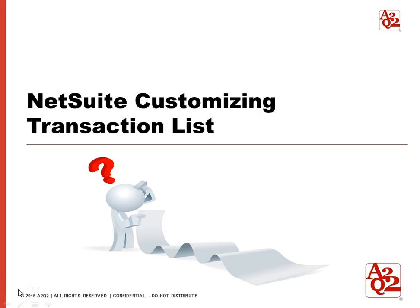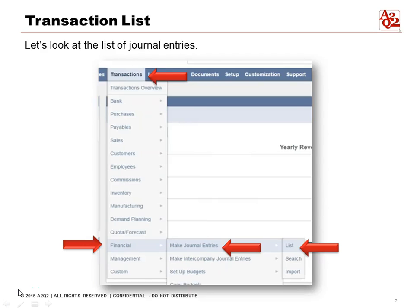Let's talk about customizing transaction lists in NetSuite. From the home page, go to Transactions, Financial, Make Journal Entries, and List.